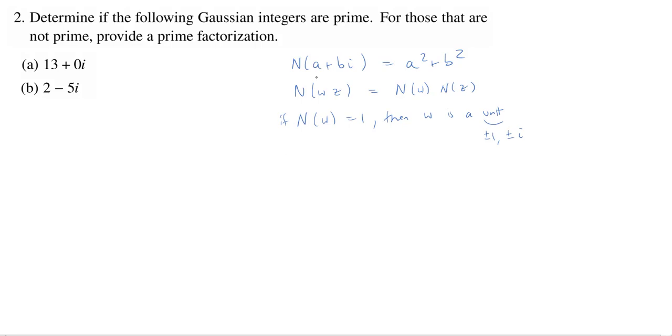Some Gaussian integer alpha in ℤ[i] is prime or indecomposable if whenever alpha is equal to a product of Gaussian integers, each of these is an element of ℤ[i], then w or z is a unit.